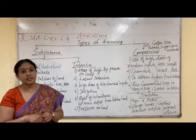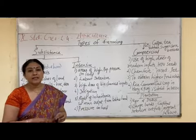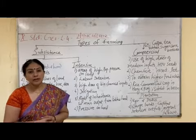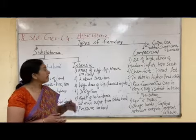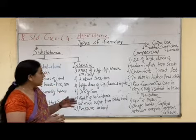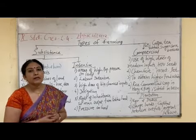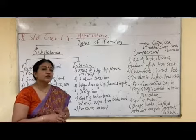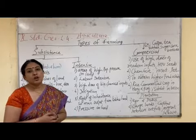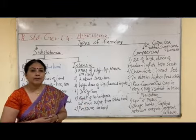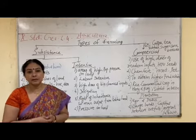Where there is high population pressure, intensive agriculture is practiced. More and more agriculture is done in the same piece of land, so more labor is also required — it is labor intensive. High doses of biochemical inputs are added to the soil to increase its fertility. Since more than one crop is grown on such land, they cannot totally depend on monsoon, so irrigation methods are used so that more than one crop can be grown in a year.